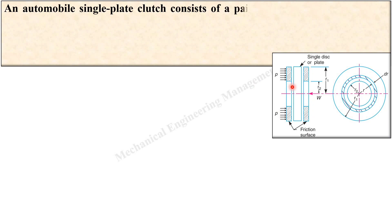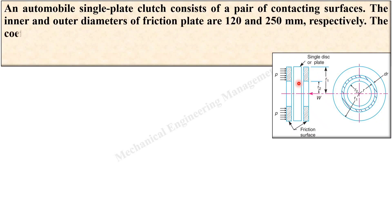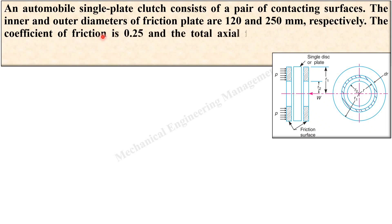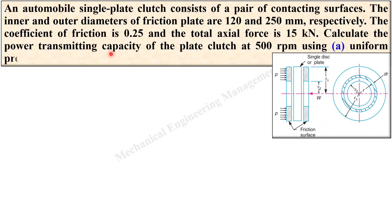An automobile single plate clutch consists of a pair of contacting surfaces. The inner and outer diameters of the friction plate are 120 and 250 mm respectively. The coefficient of friction is 0.25 and the total axial force is 15 kN. Calculate the power transmitting capacity of the plate clutch at 500 rpm using both uniform pressure theory and uniform wear theory.